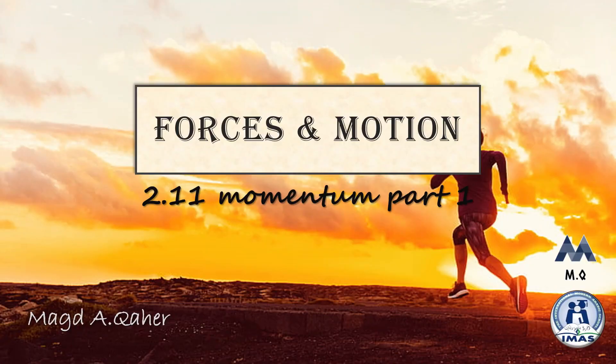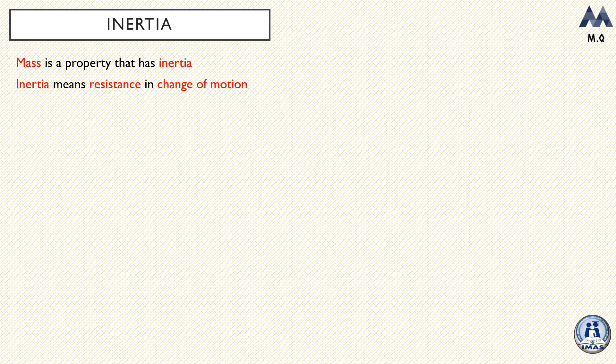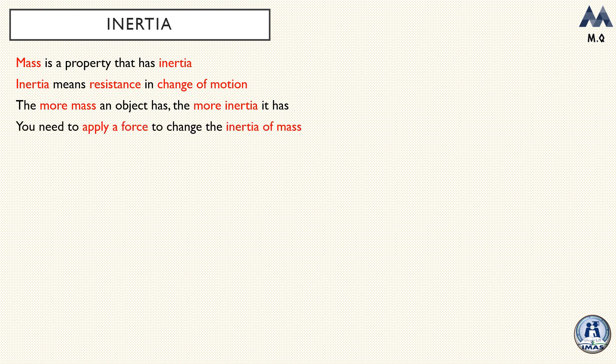Hello and welcome to the IGCSE aid channel. This lesson will cover momentum part one. Let's start by talking about inertia. Mass is a property of objects that has inertia, and inertia means the resistance to any change in motion. As the mass of an object increases, the more inertia it has, the more resistance to change.